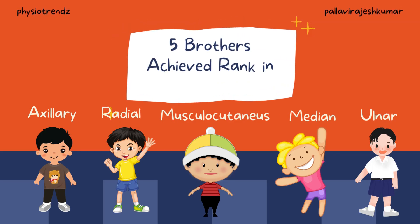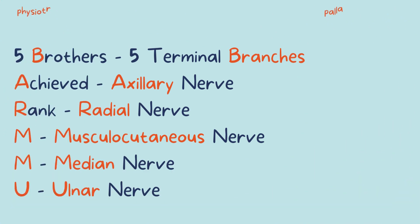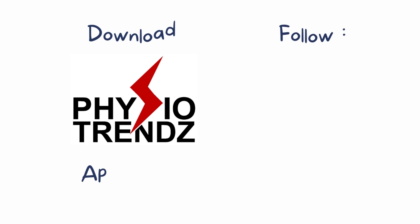'5 brothers achieved rank in MMU.' 5B stands for the 5 terminal branches: axillary, radial, musculocutaneous, median, and ulnar.